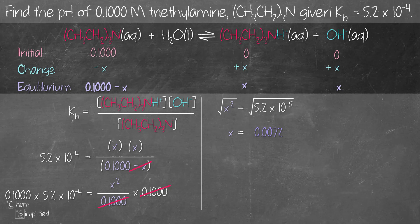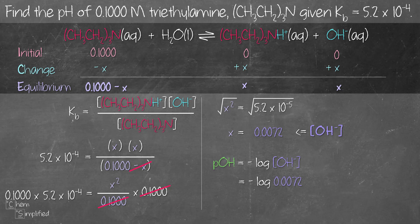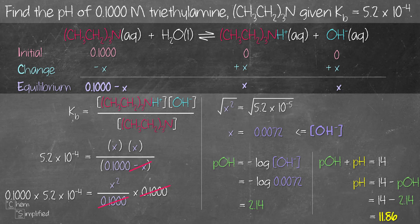The question asks us to find the pH. To find pH we need either [OH-] or [H+]. From the ICE table, the equilibrium concentration of OH- equals X = 0.0072 M. Using this, pOH = -log(0.0072) = 2.14. Since pH + pOH = 14, rearranging gives pH = 14 - 2.14 = 11.86. That is the pH of the weak base solution.